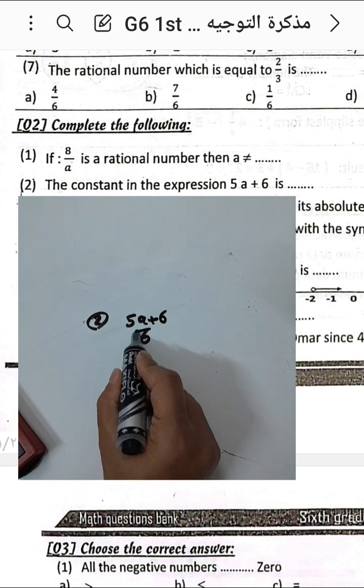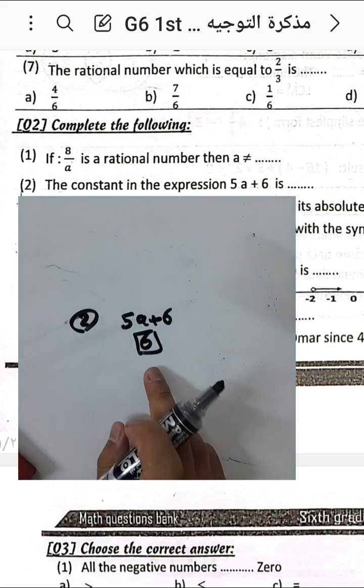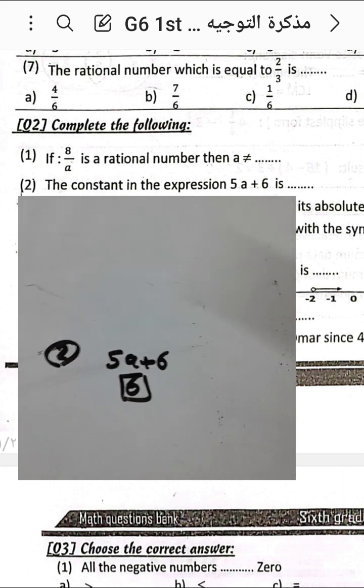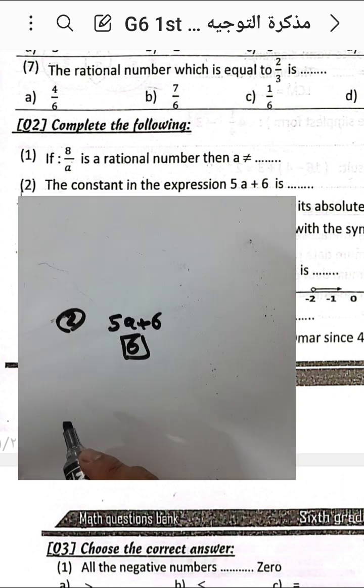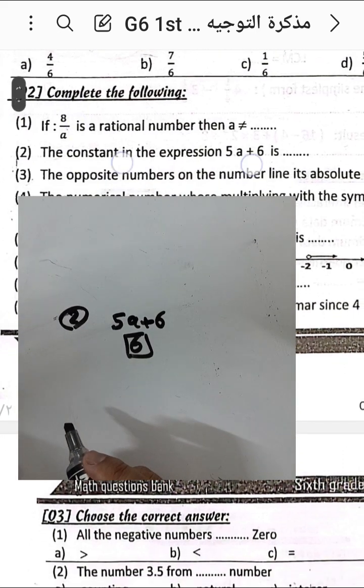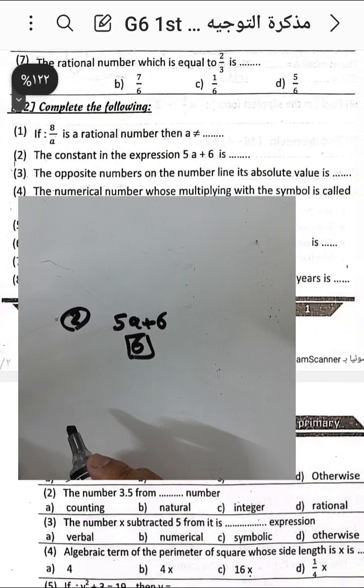Question number two: the constant in the expression 5a plus 6 — six is the constant, also called the absolute term. The absolute term here is 6, while the coefficient is 5.